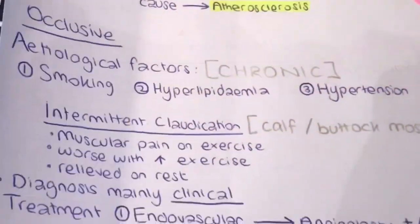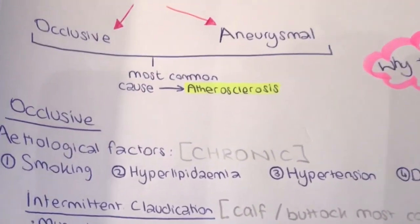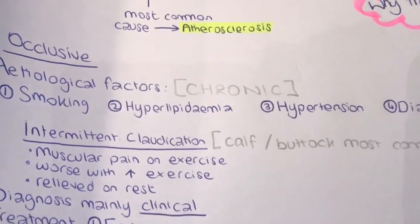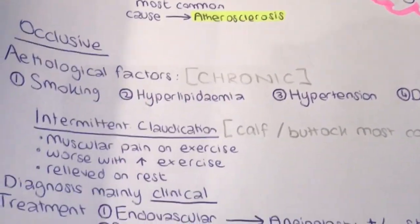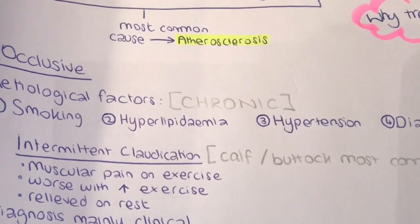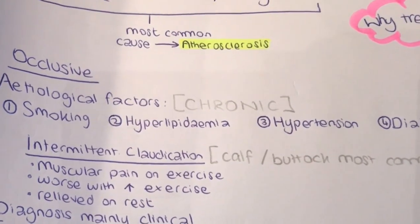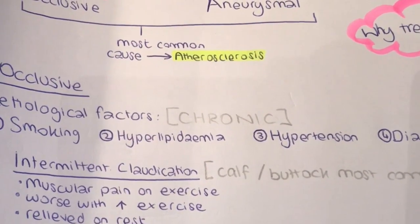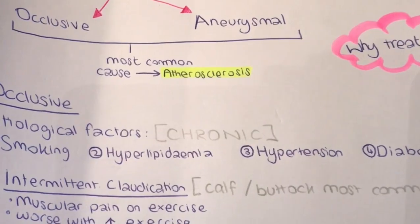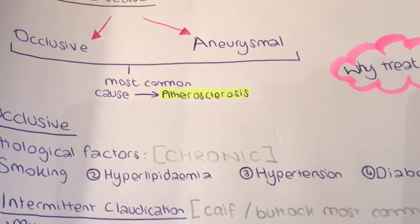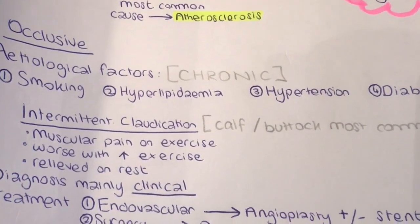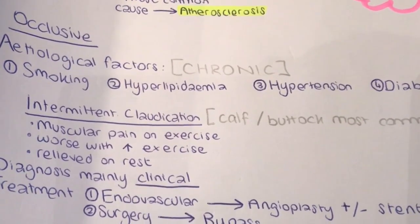Today we're going to be focusing on the occlusive type of arterial disease, starting with chronic disease. The main etiological factors, as with many other diseases in medicine, are smoking, hyperlipidemia, hypertension, and diabetes. Many patients can be asymptomatic.